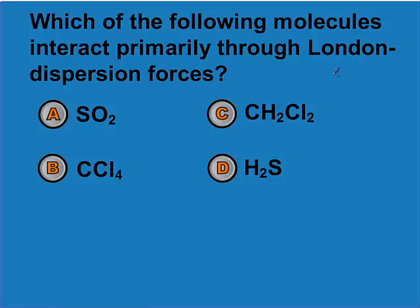Looking for the molecule that interacts primarily through London dispersion forces means we're looking for the nonpolar molecule. B is the only nonpolar molecule; A, C, and D are all polar.